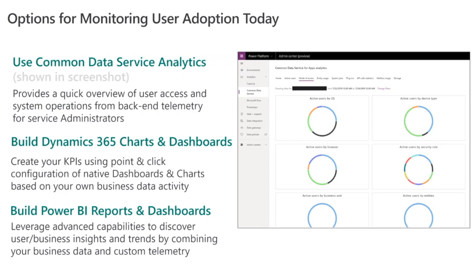For business KPIs, you want to use Dynamics 365 with charts and dashboards. This allows you to drive KPIs from business activities — it's best to focus on actual business KPIs and create reports indicating adoption from business data points. If you're looking for enhanced or advanced reporting capabilities, you can also export these and use Power BI reports and dashboard capabilities.